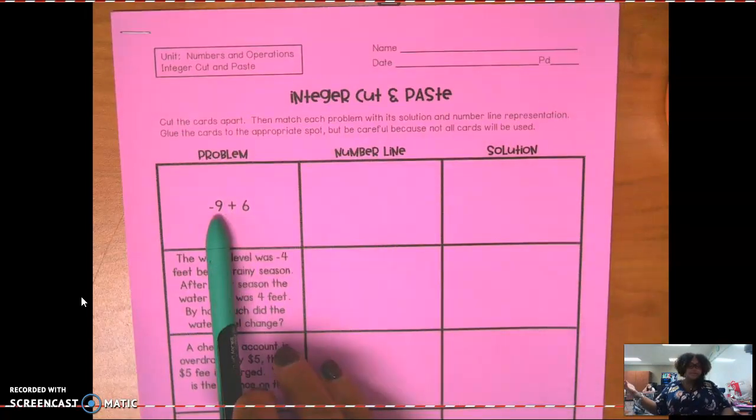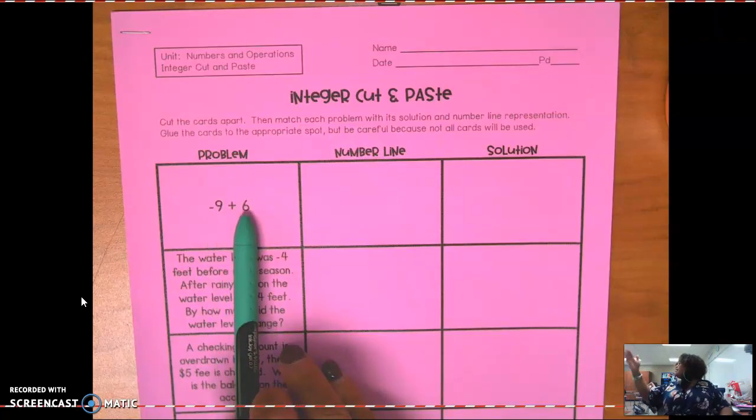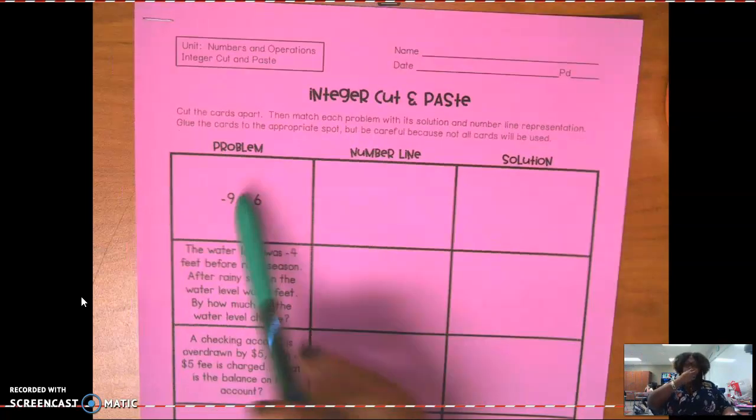Well, if we were to start at zero for this negative nine, how would we get to negative nine if we're starting at zero? Go to the left. How many spaces? Nine. And then if I want to add six, then from that negative nine, what will I do? Go to the right. How many spaces? Six. Okay, so that's what we're going to be doing.